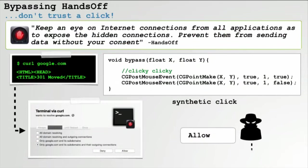Another popular Mac firewall is HandsOff, and it turns out we can bypass it via a synthetic click. For example, if we execute curl — which is something Mac malware often does to download additional components — as expected the firewall will detect this unauthorized activity and display an alert. What the attacker or malware can then do is send a programmatic synthetic click to the allow button, which clicks it, hiding the alert and allowing the connection. It also turns out there are ways to do this invisibly so that the user doesn't see the alert or the synthetic mouse click.